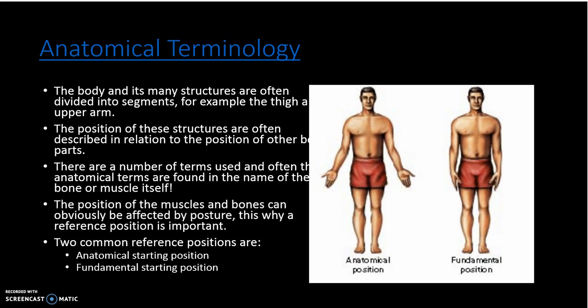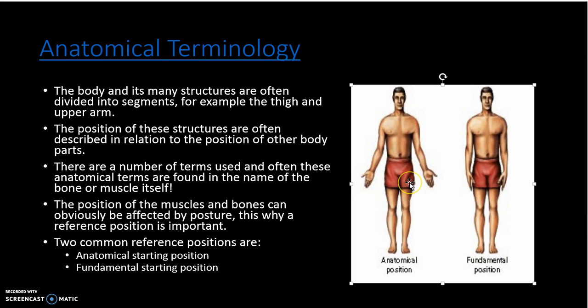The first thing we need to talk about is anatomical terminology. This is a language used by people in reference to the body so that we can understand where we're talking about and how we are talking about things in relation to one another. The body has many structures, for example the thigh and the upper arm, and we need to describe where those structures might be. So we're talking about terms such as anterior, posterior, inferior, superior, superficial or deep, and those sorts of things. You should have in your one-note guide a list of those anatomical positions and anatomical terminology.